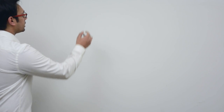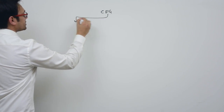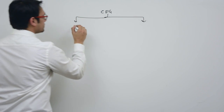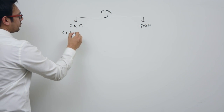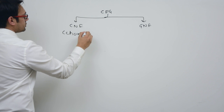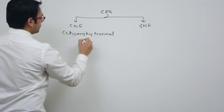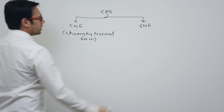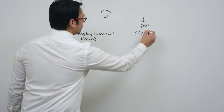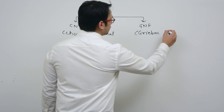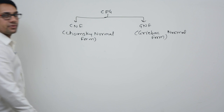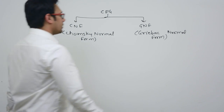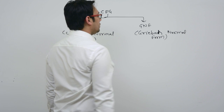There are two types of representation of context-free grammar. Number one is CNF and number two is GNF. CNF is Chomsky normal form and GNF is Greibach normal form. So we have two types of representation: number one is the Chomsky normal form and number two is the Greibach normal form.